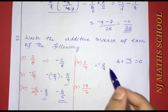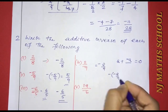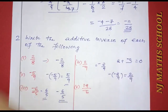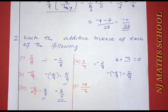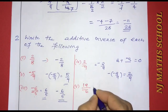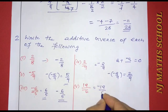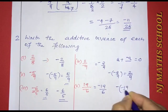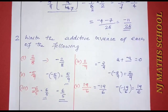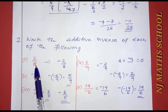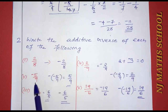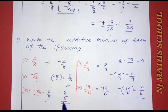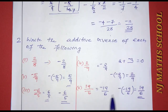The additive inverse of negative 2 by 9 is 2 by 9. For 19 by negative 6, we move the negative to the numerator: negative 19 by 6 is the standard form, so the additive inverse is 19 by 6. Summary: negative 2 by 8 → 2 by 8; negative 5 by 9 → 5 by 9; negative 6 by negative 5 → negative 6 by 5; 2 by negative 9 → 2 by 9; 19 by minus 6 → 19 by 6.